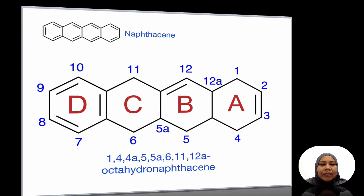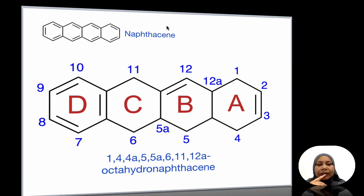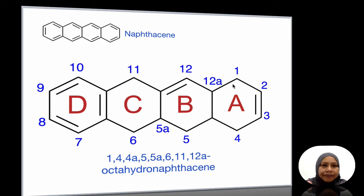Let's have a look at the structure. The main nucleus in tetracycline is called naphthacene — these are the naphthacene nucleus. There are four rings in the naphthacene nucleus, labeled A, B, C, and D.